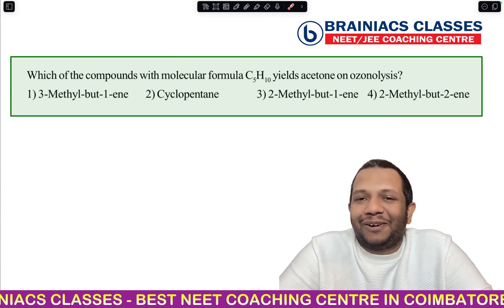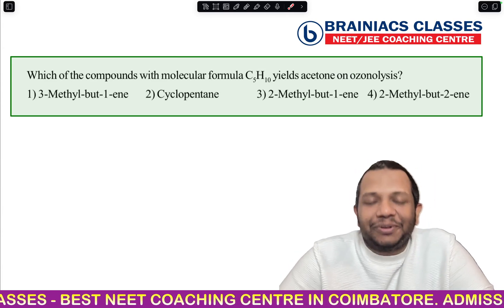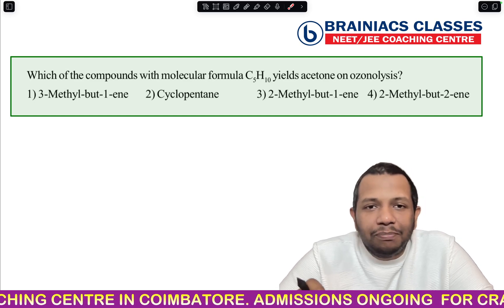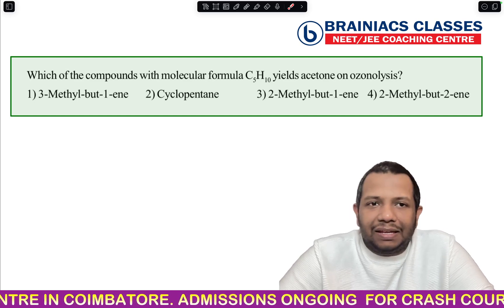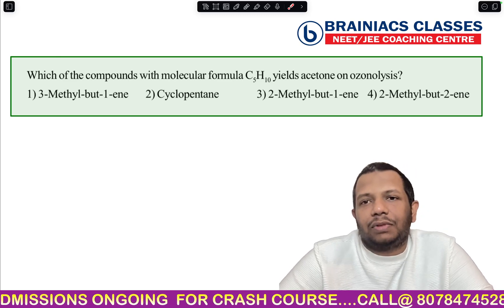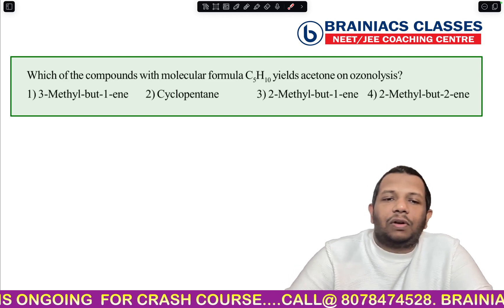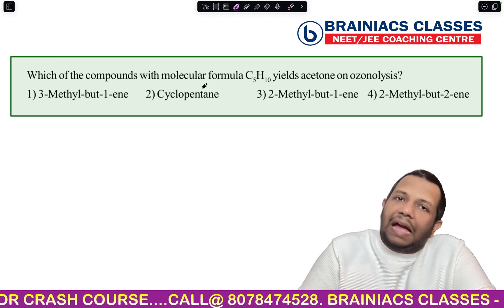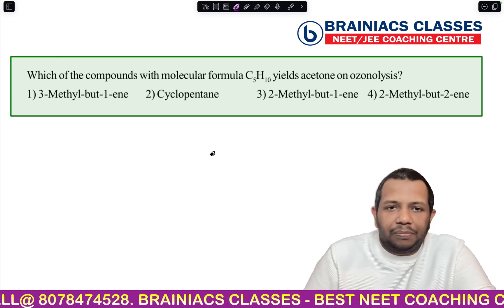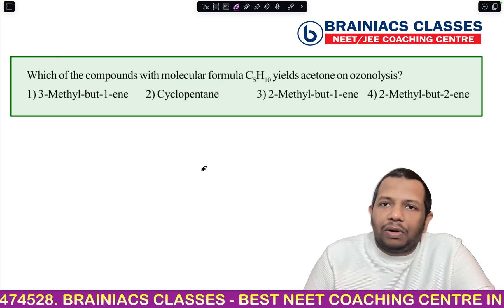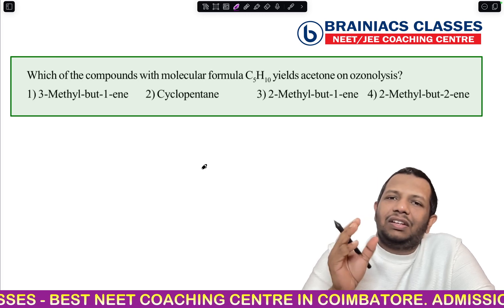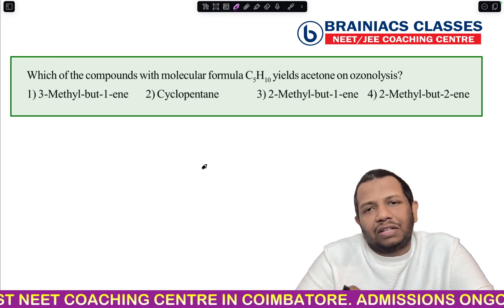Welcome to today's Brainiacs capsule. Today we are going to discuss one of the important reactions of alkenes, known as ozonolysis. This is one of the characteristic reactions given by alkenes, and alkynes and other unsaturated compounds can also undergo it. We need to focus mainly on alkenes as per our syllabus. Fundamentally, ozonolysis is the addition of ozone to the unsaturated alkene.